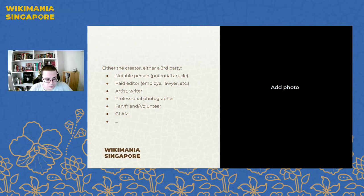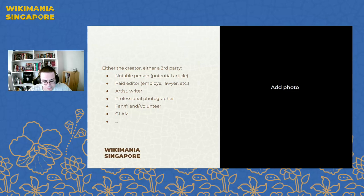It can be a fan, a friend, someone interested in posting pictures for example for an article about a friend who has their article on Wikipedia. It can be a Wikimedia chapter. I didn't present myself — I'm Jenquire, a simple member of Wikimédia France, and a contributor on Wikipedia in French since 2009.